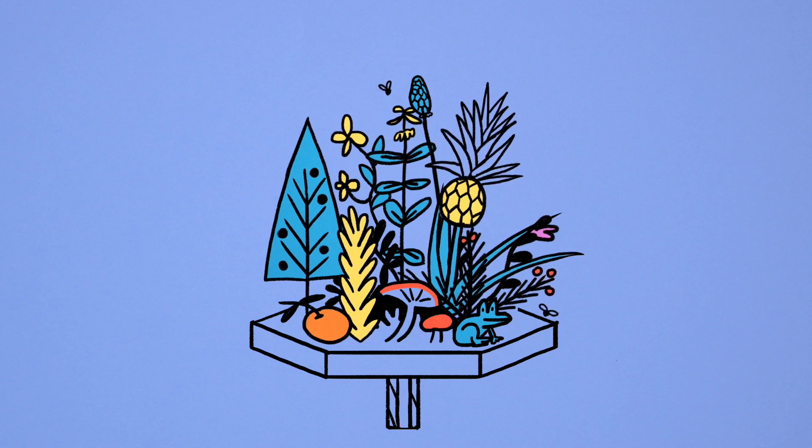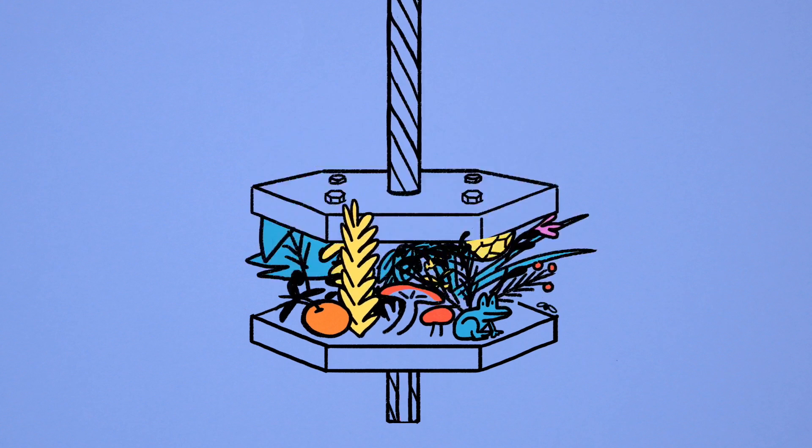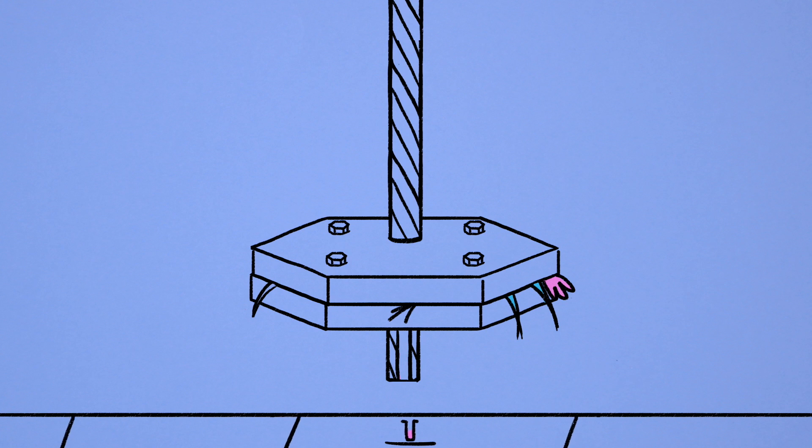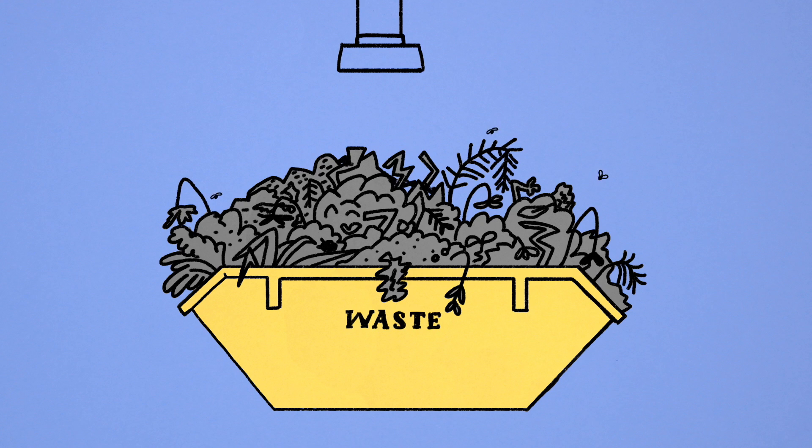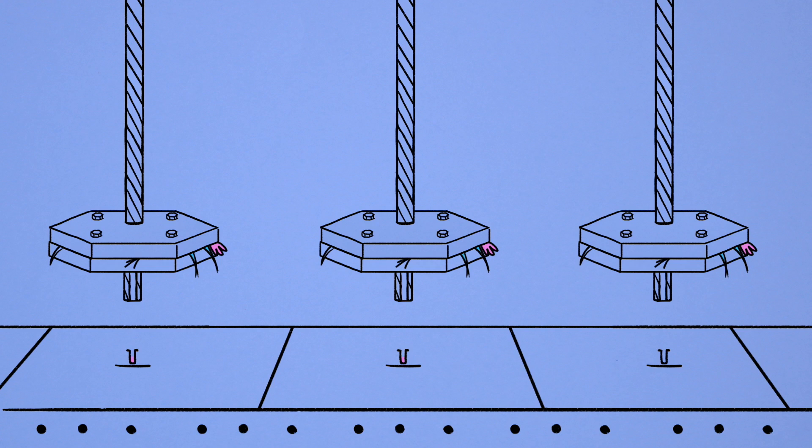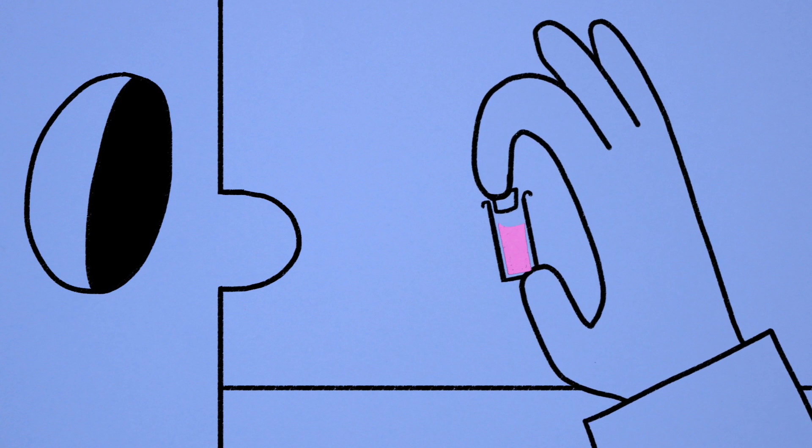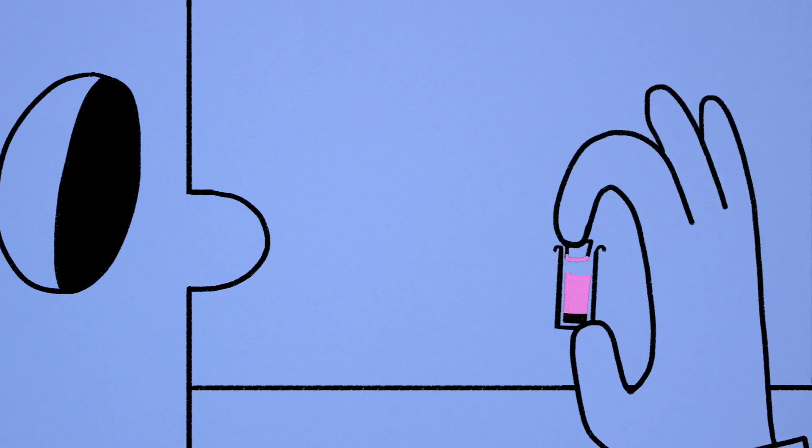But because the natural world usually produces these chemicals in tiny quantities, it would take a lot of nature and make a lot of waste to produce them naturally on an industrial scale. That's why chemists aim to replicate natural chemicals in their laboratories.